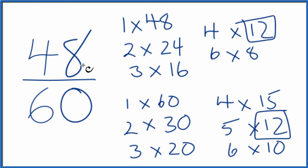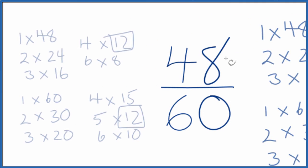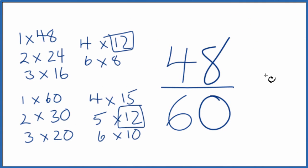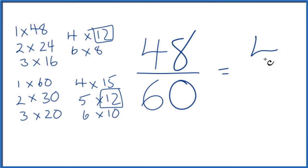So we're going to divide 48 by 12 and then 60 by 12, and we'll have simplified 48 sixtieths. Let's move this over here. So 48 divided by 12 equals four, and then 60 divided by 12 equals five.